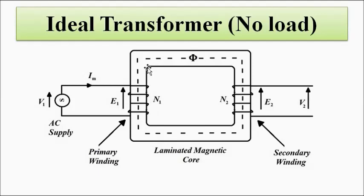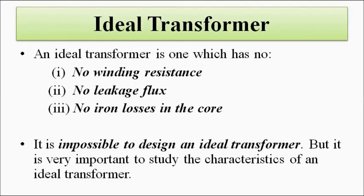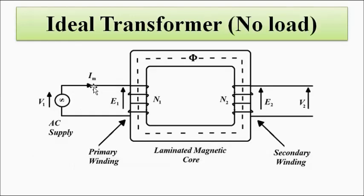Because of this flux linkage, EMF is induced in both the primary and the secondary windings as per Faraday's law of electromagnetic induction. In an ideal transformer, the primary winding does not have any resistance — it is a pure inductor. There is also no leakage flux. Leakage flux is the flux produced in a particular winding that does not link with the other winding and only links with itself.